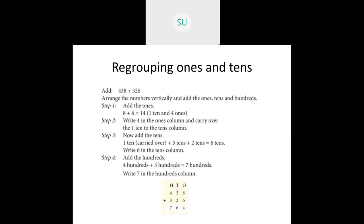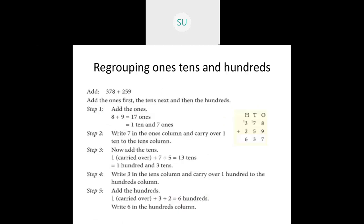Then we add the 100s: 4 hundreds plus 3 hundreds which is 7 hundreds. So the answer is 764. So this was regrouping 1s and 10s.